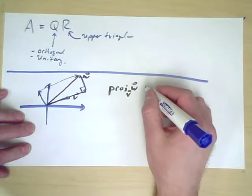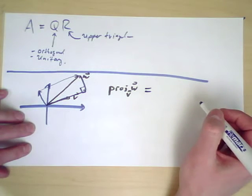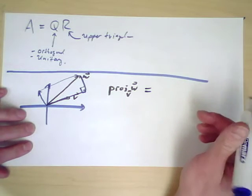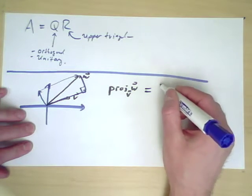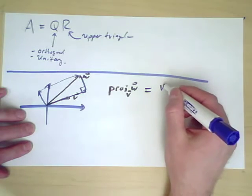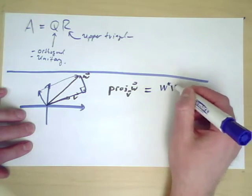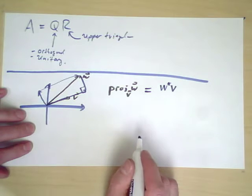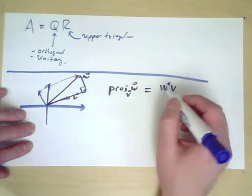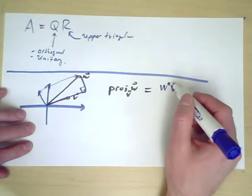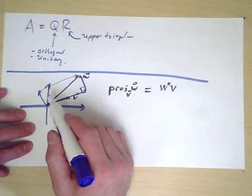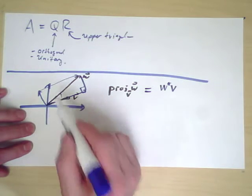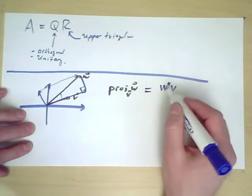You may recall that to do this projection, we do the following. First of all, we take advantage of the dot product, or the inner product. So we look at V, let's say W star V. So that would be, if V were length one, this would be the appropriate length for the cosine, to compute the cosine of this angle. But if V is not length one, then we have to divide by the norm of V.